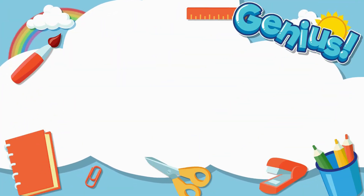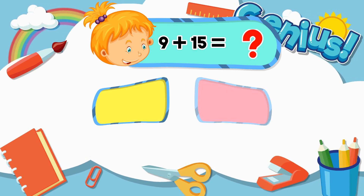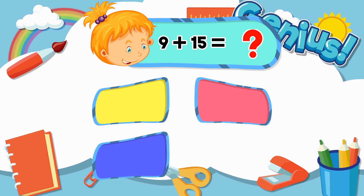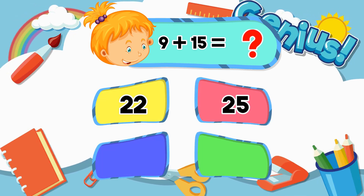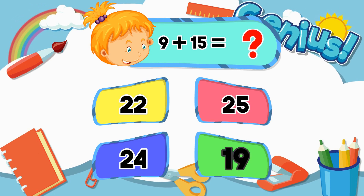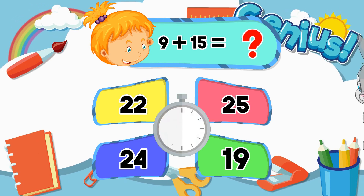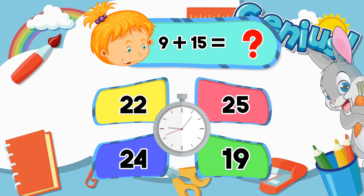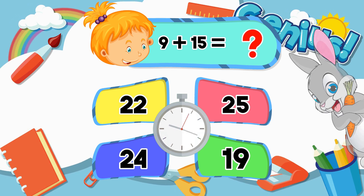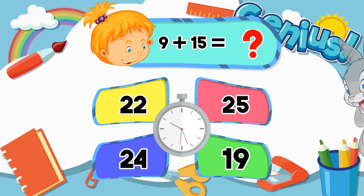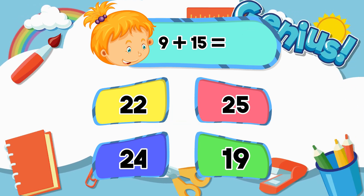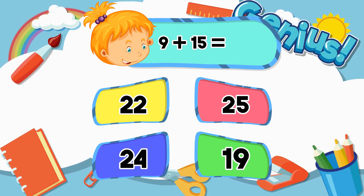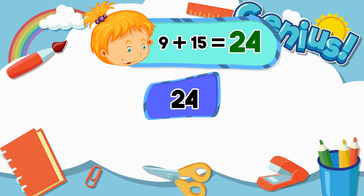What is 9 plus 15? Options: 25, 19. The correct answer is 24.